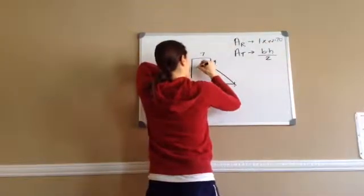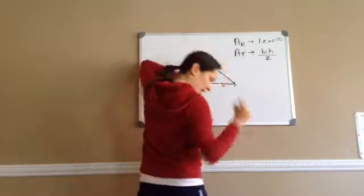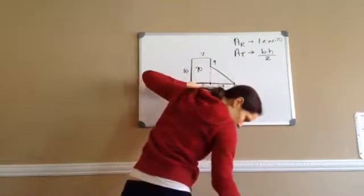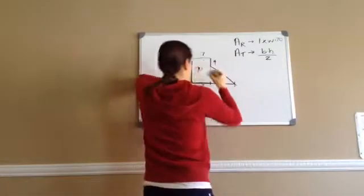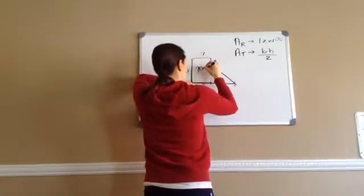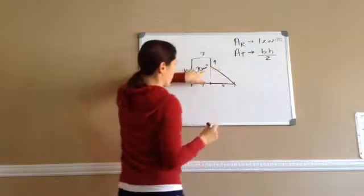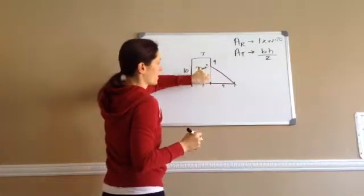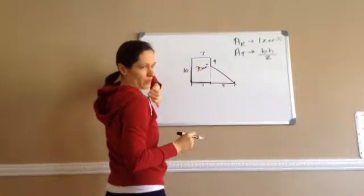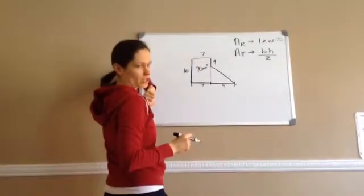10 times 7 is 70, so I'm going to put 70 — and this is in millimeters — so 70 millimeters squared. Squared because whenever you're working with area, it's always squared.